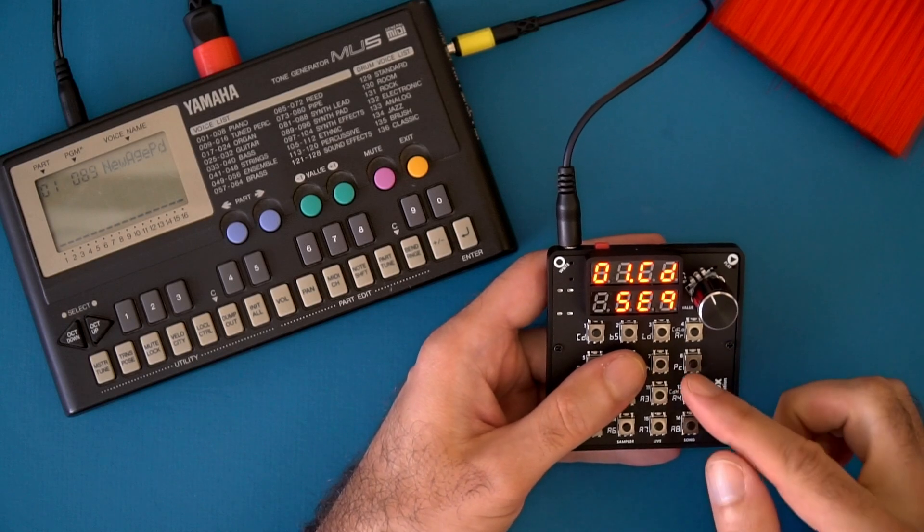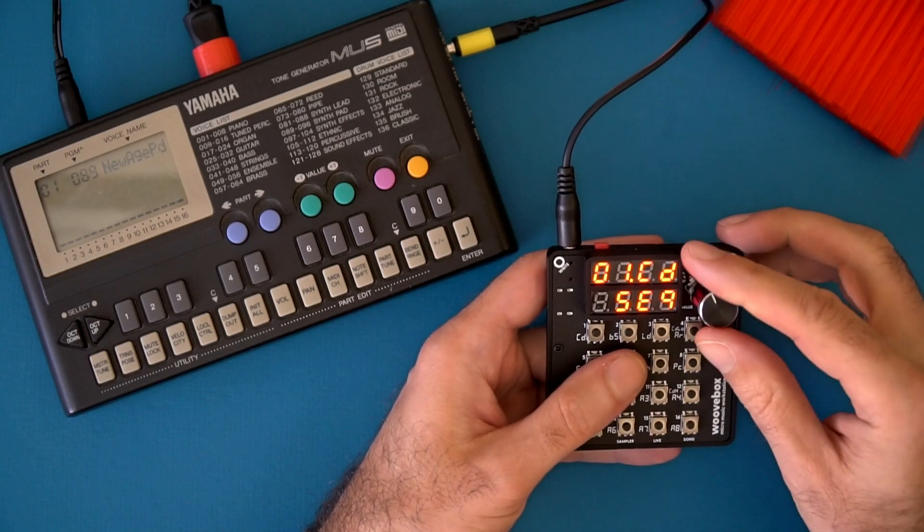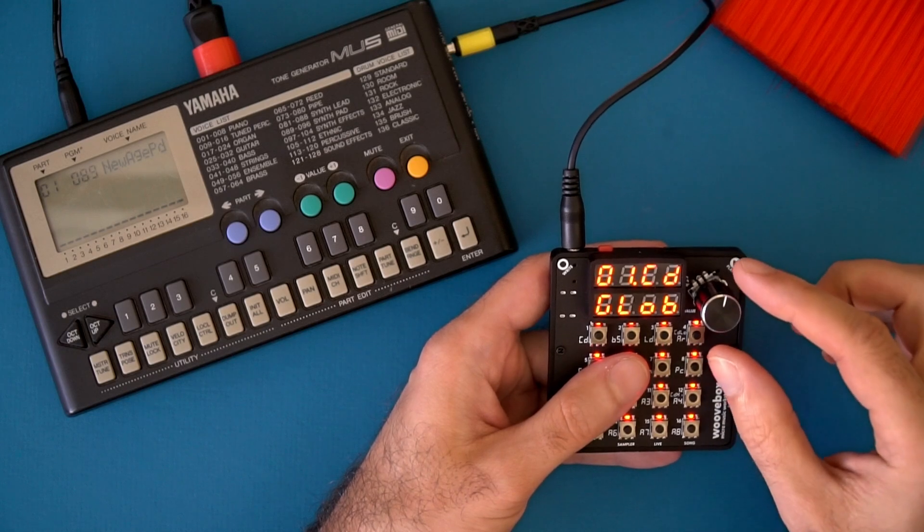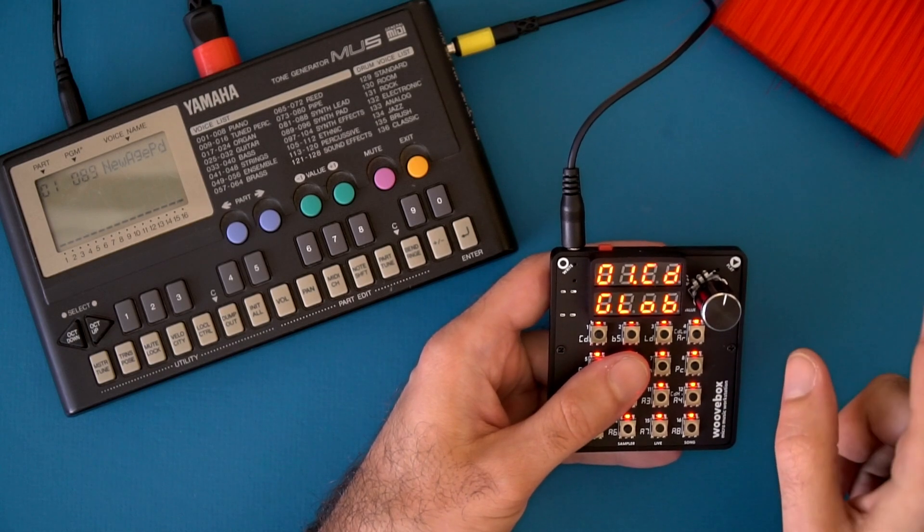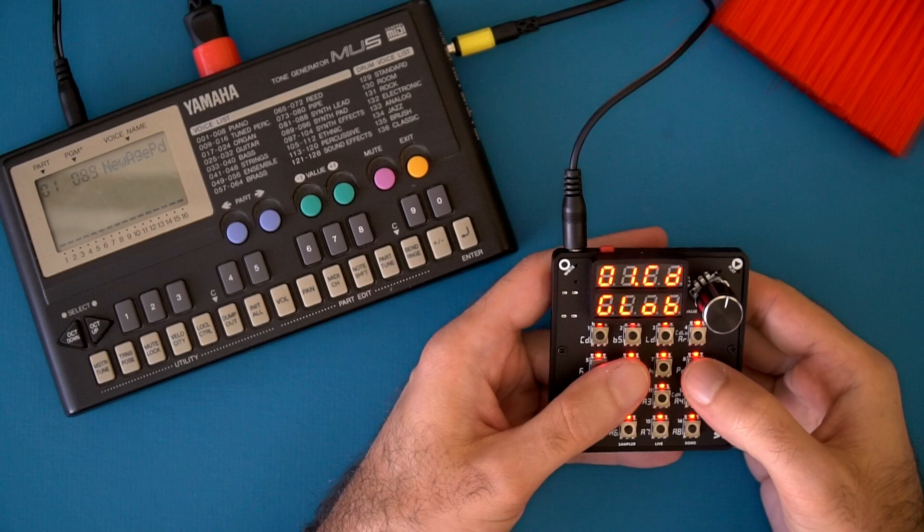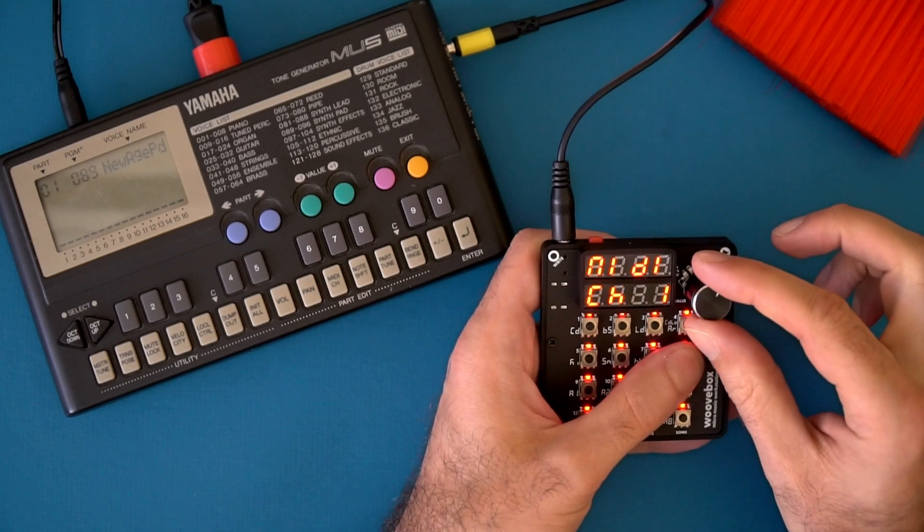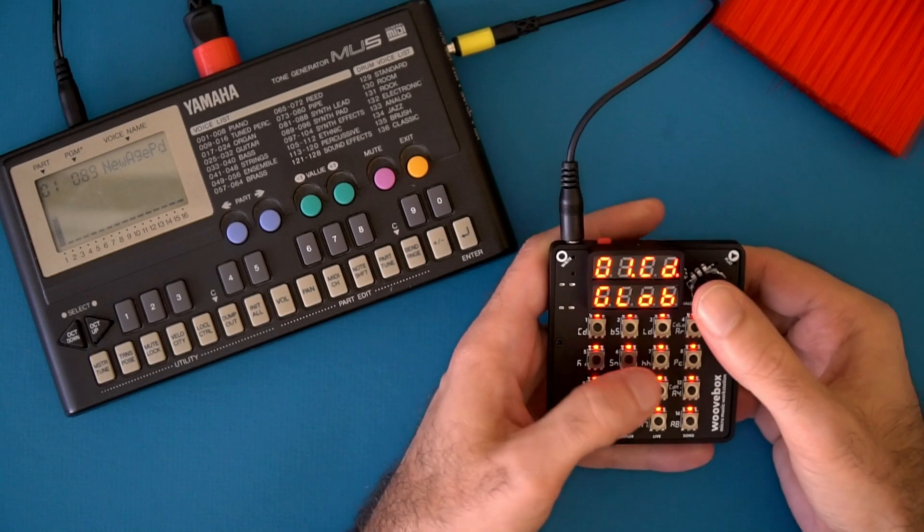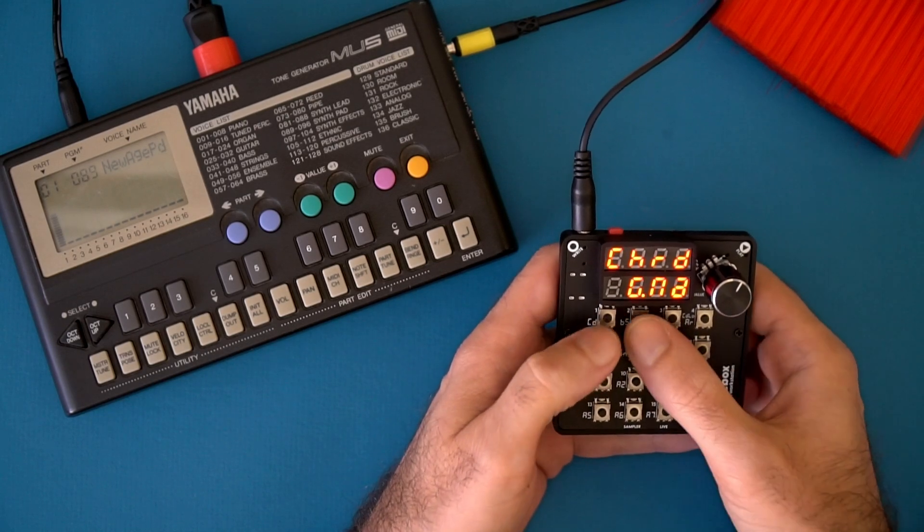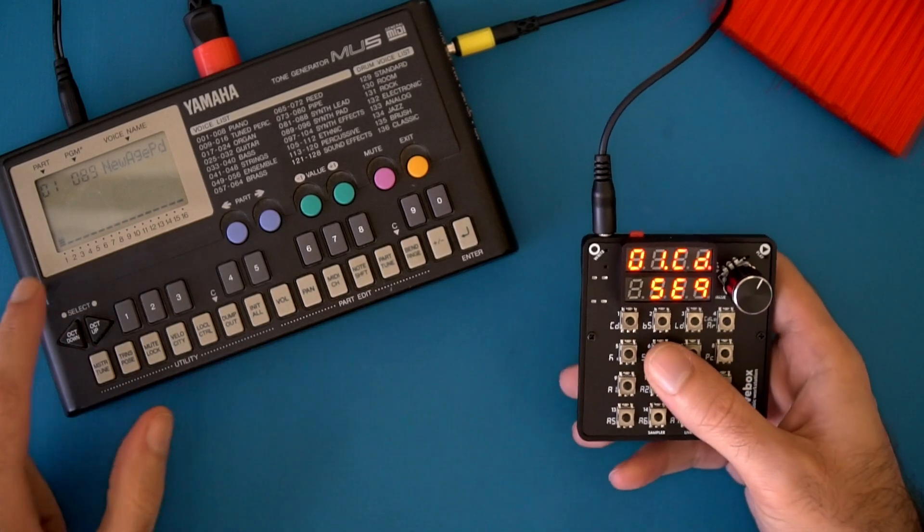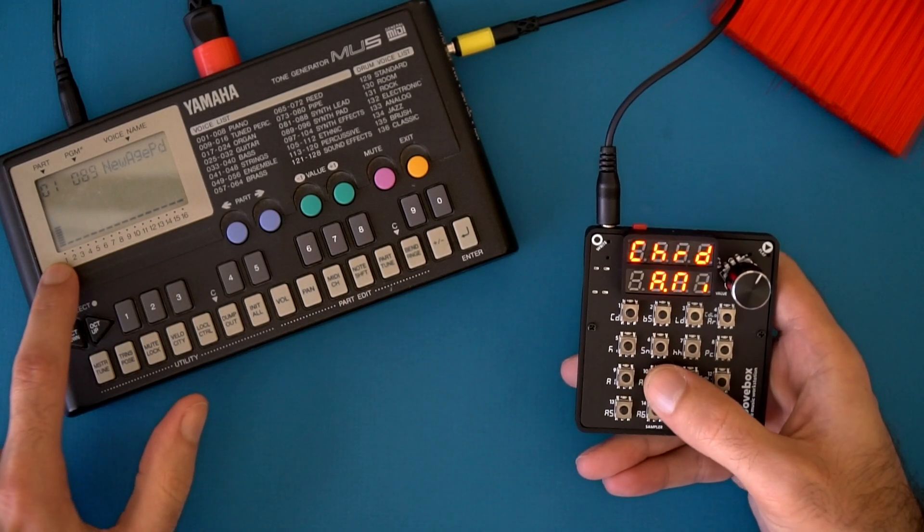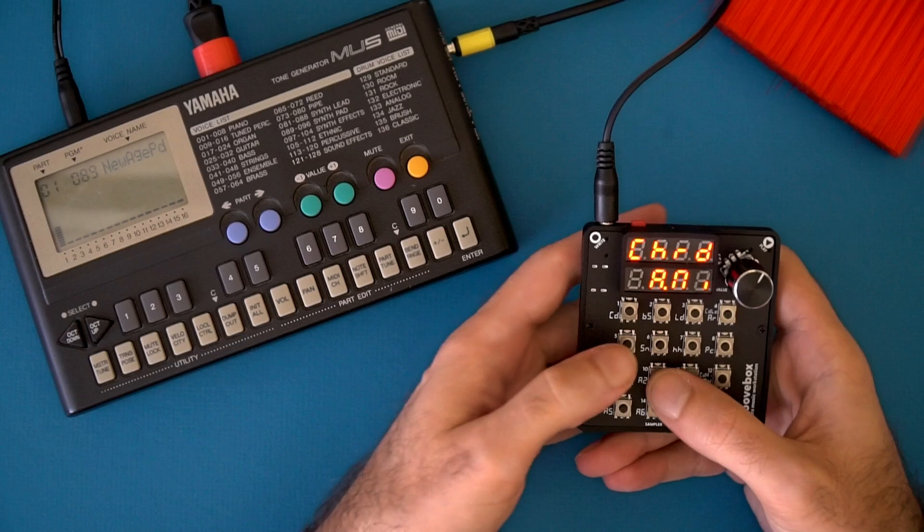That's because you have to set the MIDI out channel. And you do that in the global page. So navigate to the global page by turning the encoder to the right two pages. And then it is going to be key 8. So you hold it down. And I'm going to go for channel 1. And now I'm triggering the chords on the Yamaha.